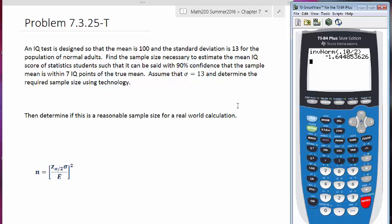We see that we're going to get a negative value, but we'll just consider the positive value. So Z sub alpha over 2 is equal to 1.645.